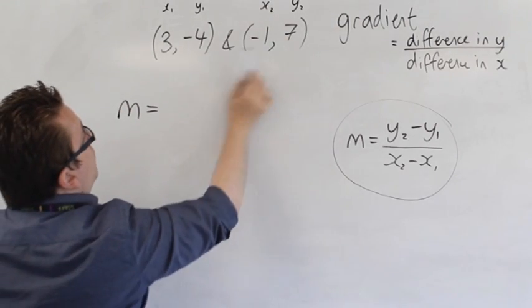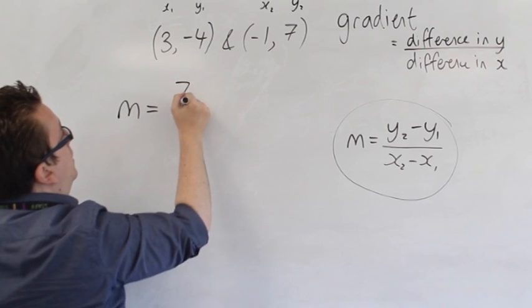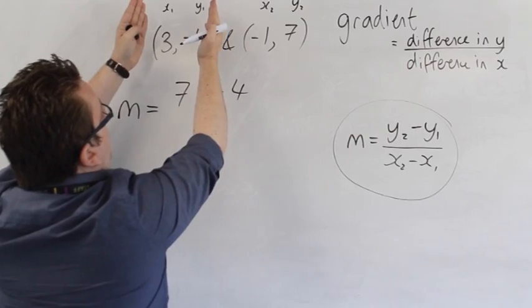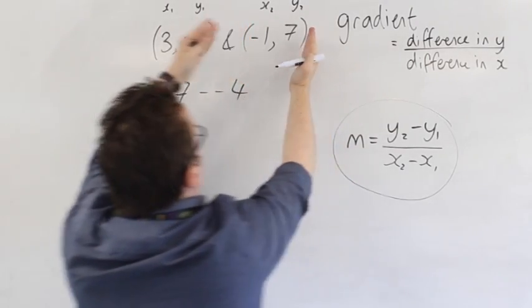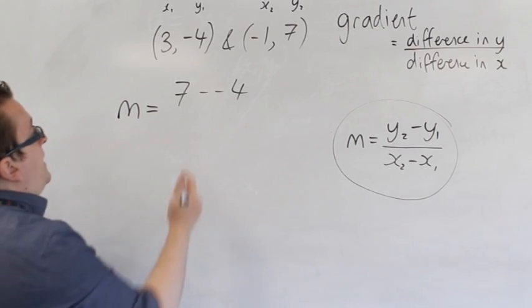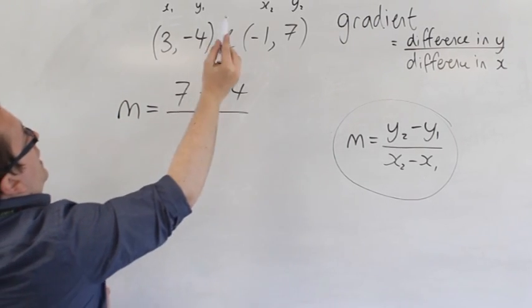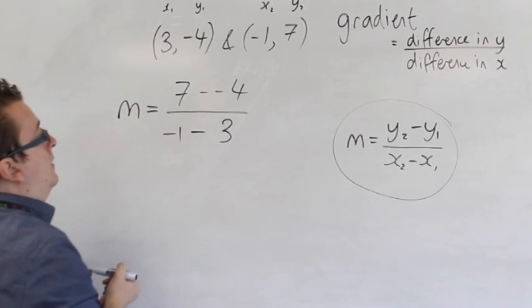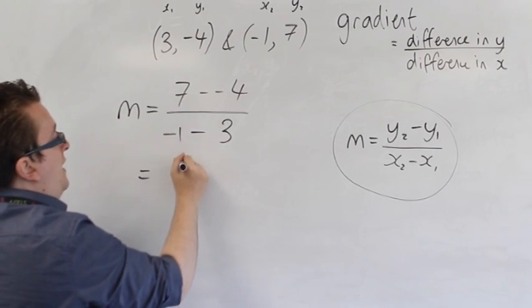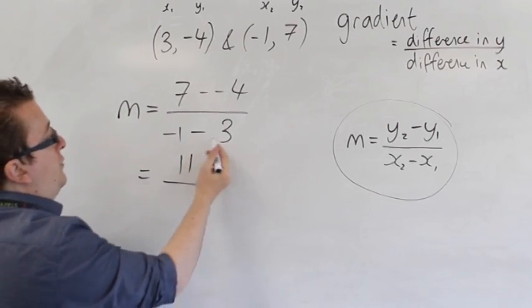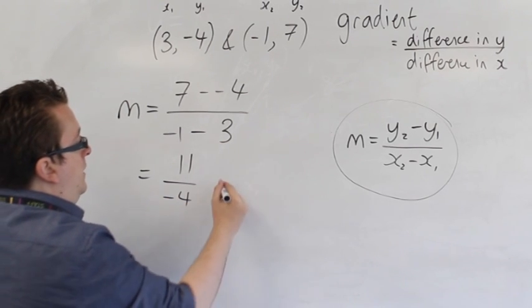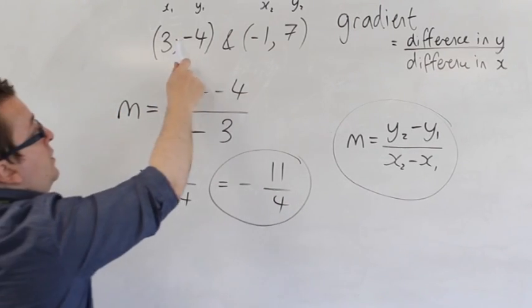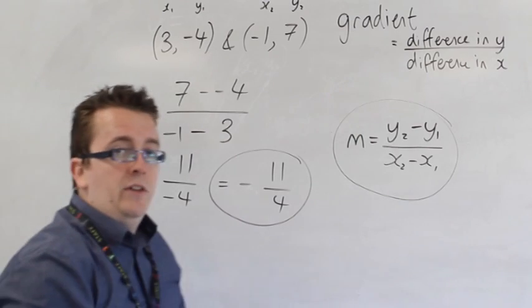So it's the difference between the Ys, so we have Y2 take away Y1. And it didn't matter if I put that as X1, Y1, or that as X1, Y1 - it doesn't matter which way round you call them, it wouldn't make any difference. And we've got X2 take away X1, so we've got 7 take away minus 4 is 11, that becomes plus 4, and minus 1 take away 3 is minus 4. So in actual fact, the gradient of the line that goes through these two points is minus 11 quarters.